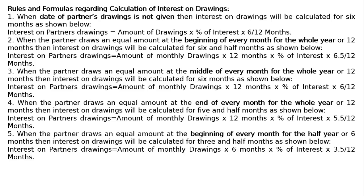The fifth rule: when the partner draws an equal amount at the beginning of every month for 6 months, then interest on drawings will be calculated for 3 and half months. Interest on partner's drawings equals amount of monthly drawings multiplied by 6 months multiplied by percentage of interest on drawings multiplied by 3.5 upon 12 months.